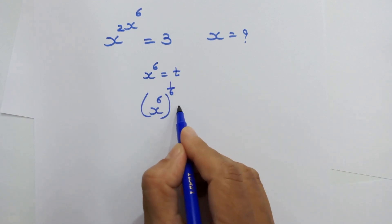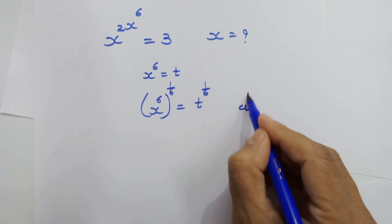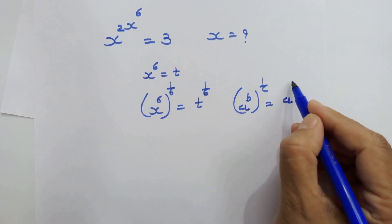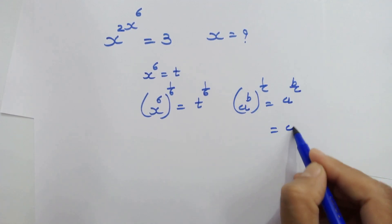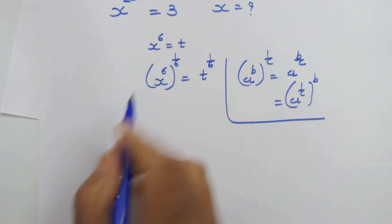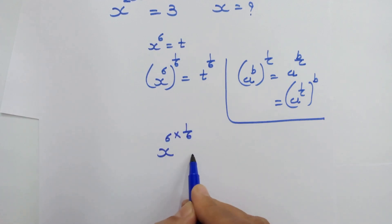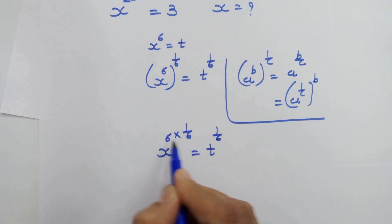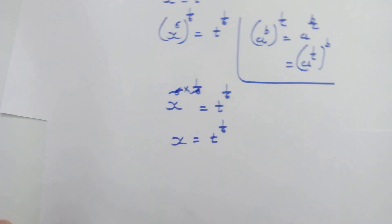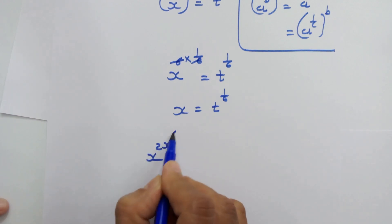So we have x raised to 6, whole raised to 1 upon 6, is equal to t raised to 1 upon 6. As we know, if we have a raised to b, whole raised to 1 upon c, we can write it as a raised to b upon c, or equivalently a raised to 1 upon c, whole raised to b. In this manner, x raised to 6 times 1 upon 6 equals t raised to 1 upon 6. These two cancel, so we have x is equal to t raised to 1 upon 6.